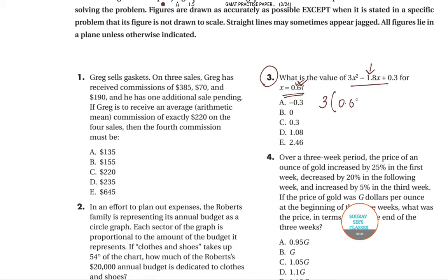The equation is 3 times 0.6 squared—since it's a square we multiply 0.6 with 0.6—minus 1.8 times 0.6 plus 0.3. If you simplify this you get 1.08 minus 1.08 plus 0.3. The answer is 0.3, so the answer will be option C.